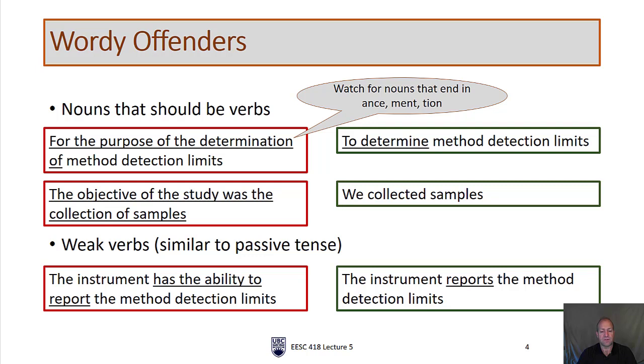'The instrument has the ability to report the method detection limits'—the instrument reports the method detection limits. On the right, this is a stronger verb. On the left, we're using the word 'has' as a verb. Anytime you see the word 'is' followed by some verb phrase, or 'has,' if you can just simply use the verb or an entirely different verb to replace that whole phrase, you'll end up with a more concise sentence.